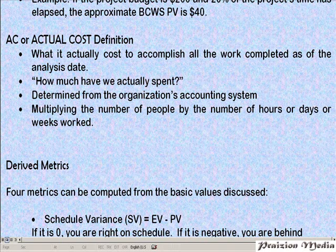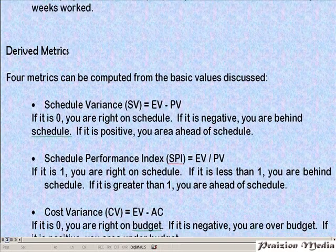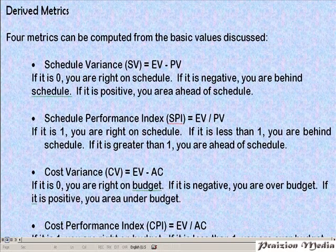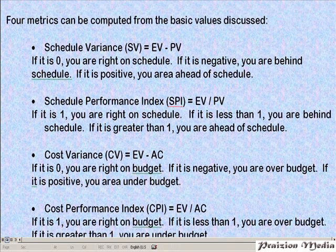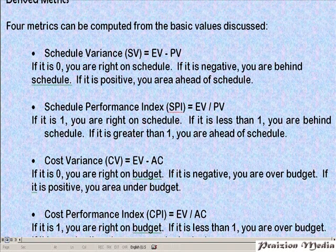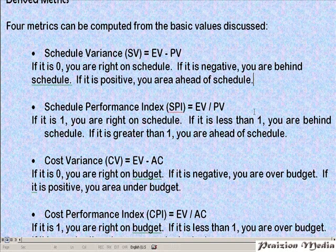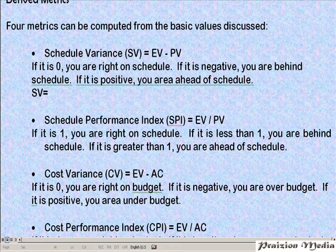Now let's talk about derived metrics. There are some derived metrics from those three basic Earned Value values, and these metrics can be computed in different ways. Let's first talk about Schedule Variance. Schedule Variance is the variance in schedule, and it can be computed using the formula: EV minus PV. Schedule Variance is a measure of how much you have deviated from your schedule. If Schedule Variance is negative, you are behind schedule; if it's positive, you're ahead of schedule. In our example, Earned Value is $10 and Planned Value is $20.